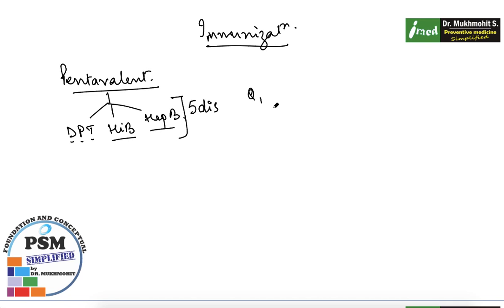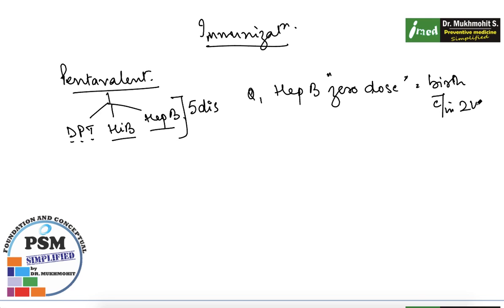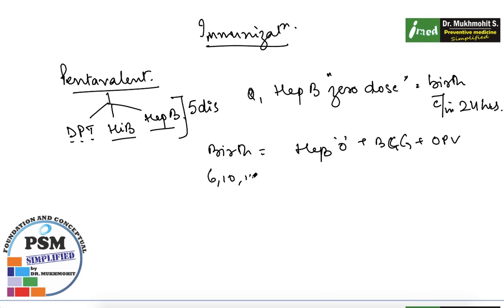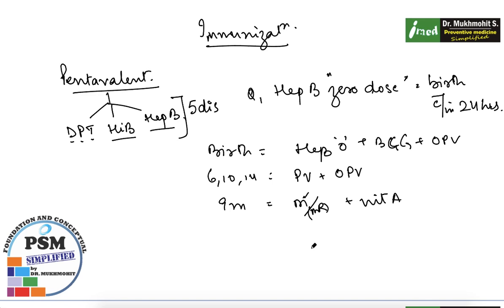An important MCQ point: hepatitis B zero dose is given at birth within 24 hours and is not affected by the launch of the pentavalent vaccine. At birth we give hepatitis B zero dose, BCG, and OPV. At 6, 10, and 14 weeks there is pentavalent vaccine plus oral polio vaccine. At nine months we have measles or MR vaccine plus vitamin A.